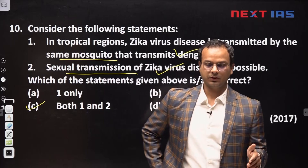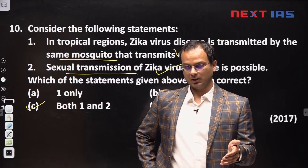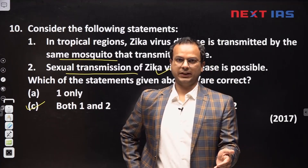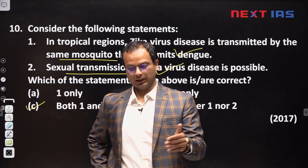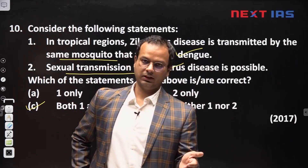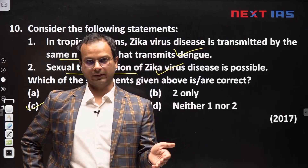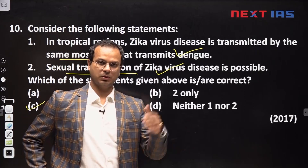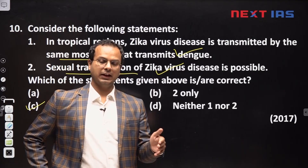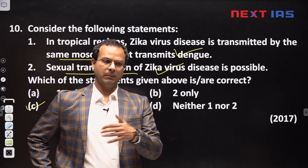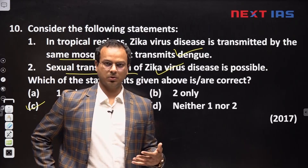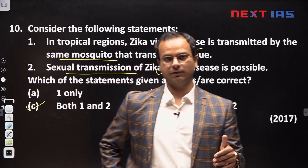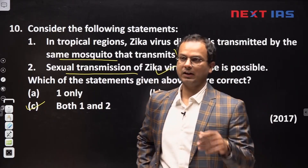Only the female mosquito spreads disease because only the female mosquito bites. It needs blood to produce eggs, and blood contains a lot of proteins. So it bites people, takes proteins from their blood, and then lays eggs. The male mosquito does not need as much protein and can survive on fruit juice, fruit nectar, and flower nectar.